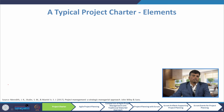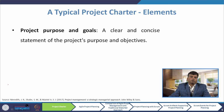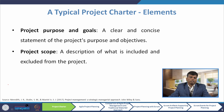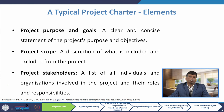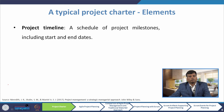Now we will show the typical project charter elements. First, the project charter will contain project purpose and goals — that is a clear and concise statement of the project's purpose and objectives. The second element is project scope, a description of what is included and excluded from the project. Then project stakeholders — a list of all individuals and organizations involved in the project and their roles and responsibilities. The next element is project timeline, that is a schedule of the project milestones including start and end dates.